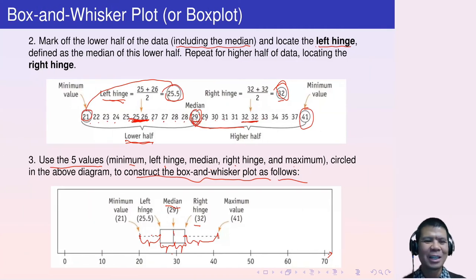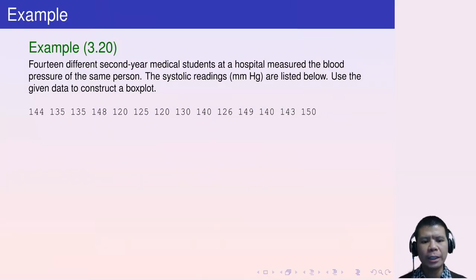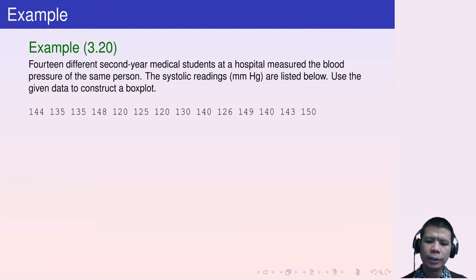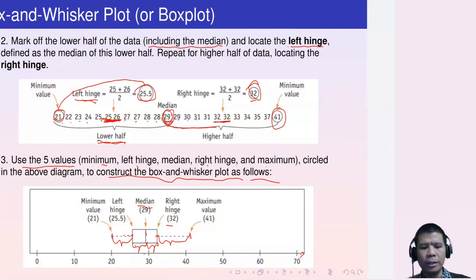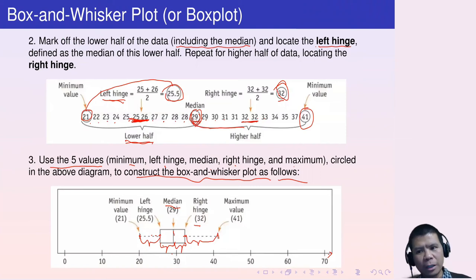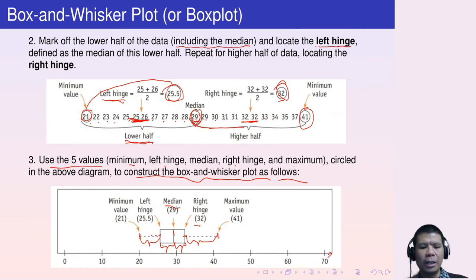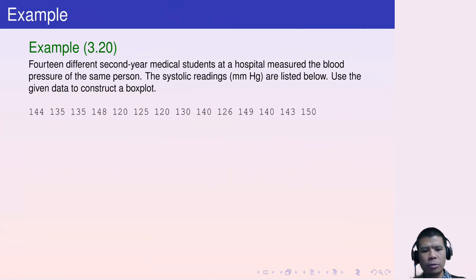Let's consider another example. Fourteen different second-year medical students at a hospital measured the blood pressure of the same person. The systolic readings are listed below. Use the given data to construct a box plot. We follow three steps: list values in increasing order and locate the median; mark off the lower and upper halves to find the left and right hinges; then use the five numbers to construct the box plot.